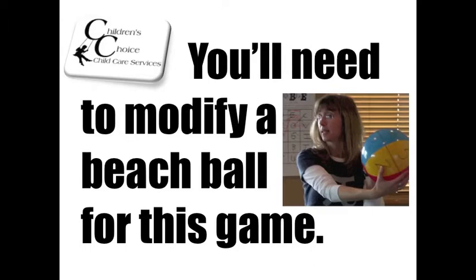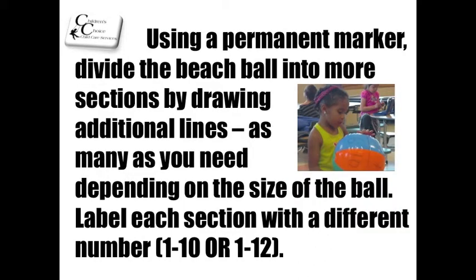You'll need to modify some beach balls for this game. Using a permanent marker, divide the beach ball into more sections by drawing additional lines — as many as you need depending on the size of the ball. Label each section with a different number, 1 to 10 or 1 to 12.